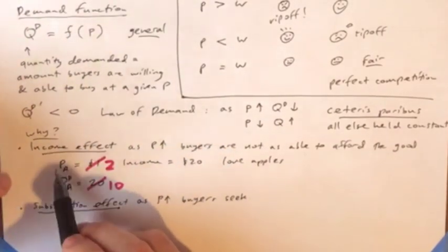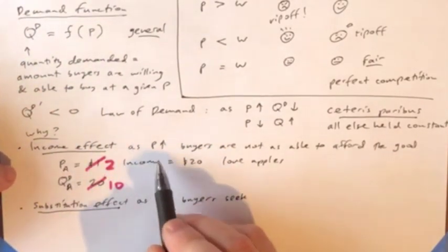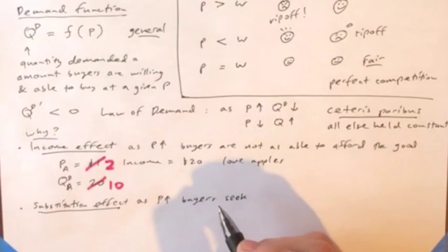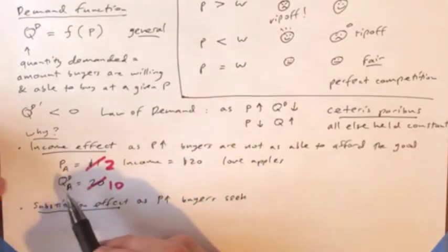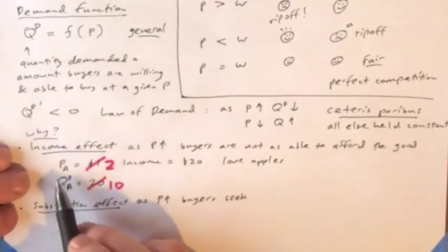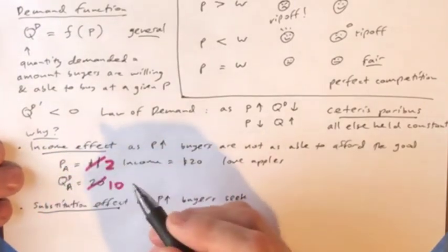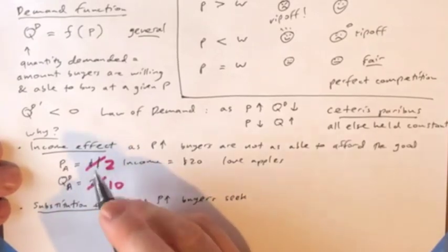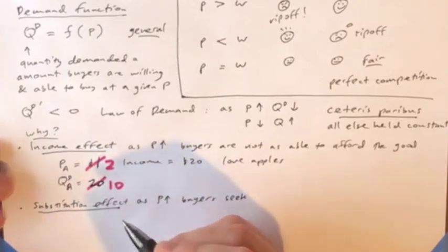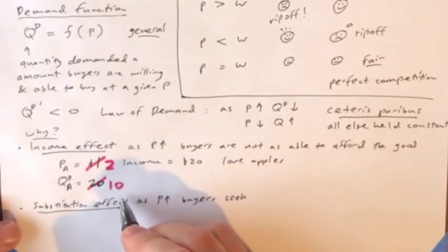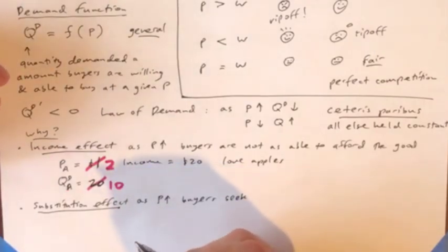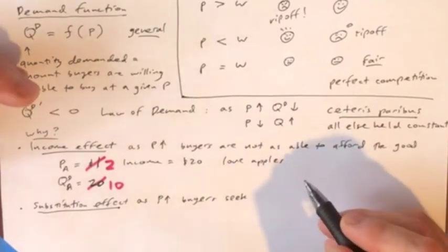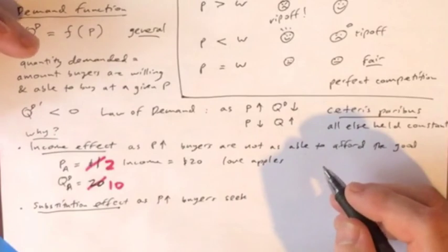The reasoning is, first of all, there's an income effect. As the price goes up, buyers are not as able to afford the good. Imagine that our initial situation, we're talking about an individual who loves apples. The price of apples, let's say, is originally a dollar. The person's income is twenty dollars. At one dollar, they're able to afford twenty apples, but at two dollars, they're only able to afford ten. That's the income effect, pretty simple.